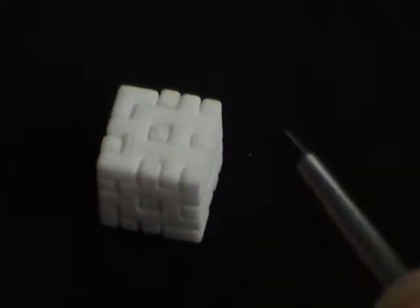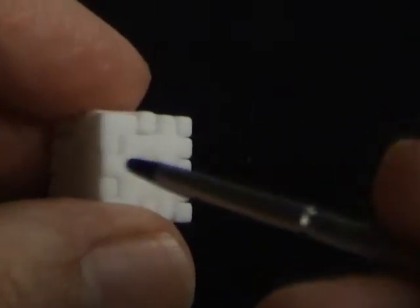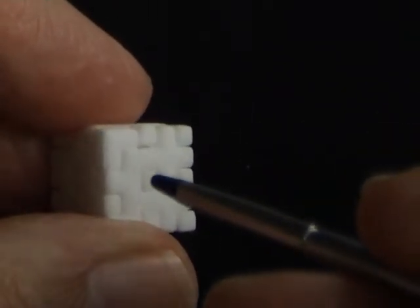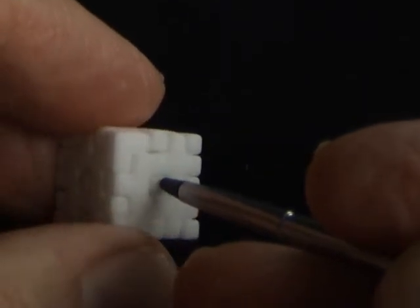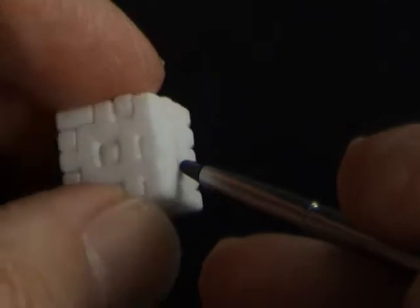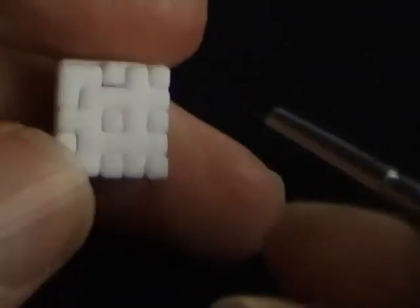The way you get it open is by pushing with a stylus or a paper clip on these central squares. Now I don't know which two it is, but it'll be two of them opposite each other. It might be these two or these two.